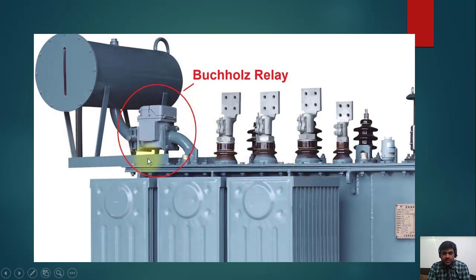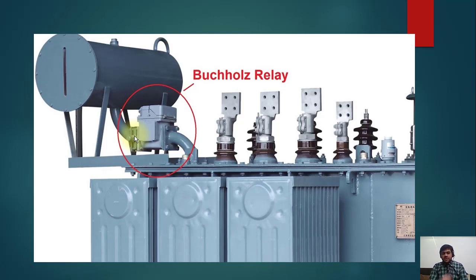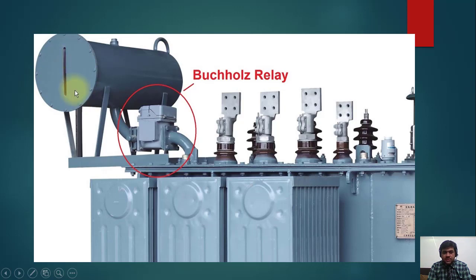This is the actual real picture of the transformer — here you can see what the Buchholz relay looks like. This is the conservator and this is the main body of the transformer. You may ask: why do we need a conservator? The answer is that oil expands and contracts as heat increases or decreases, so the conservator provides a buffer margin to allow the oil to expand or contract.